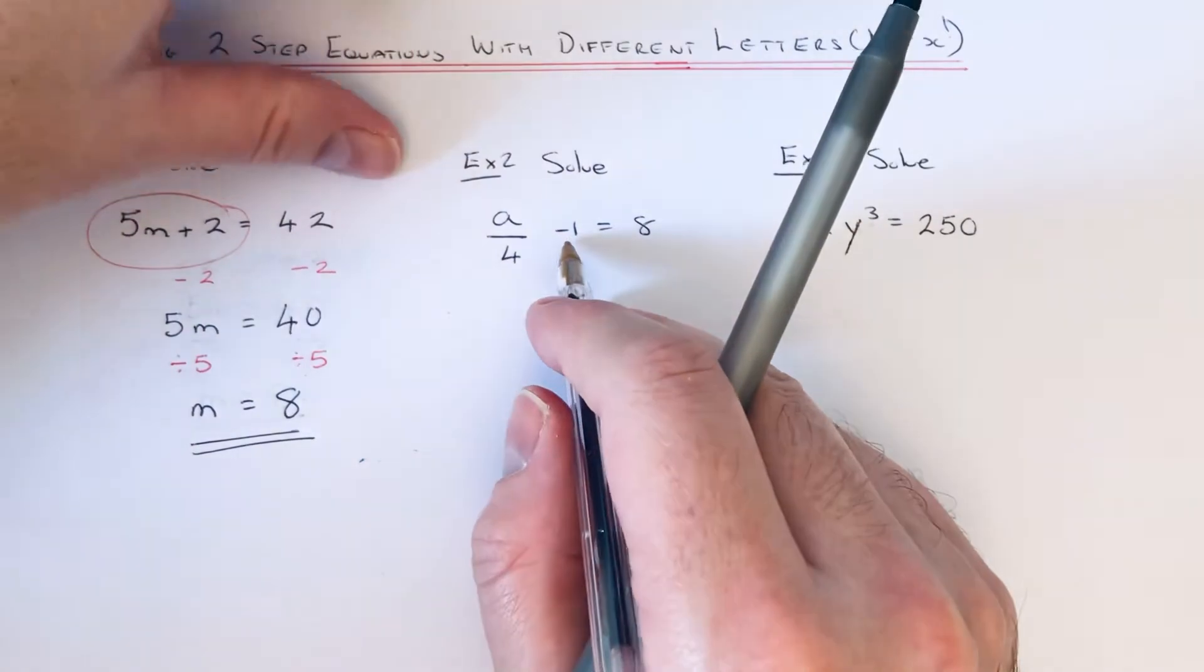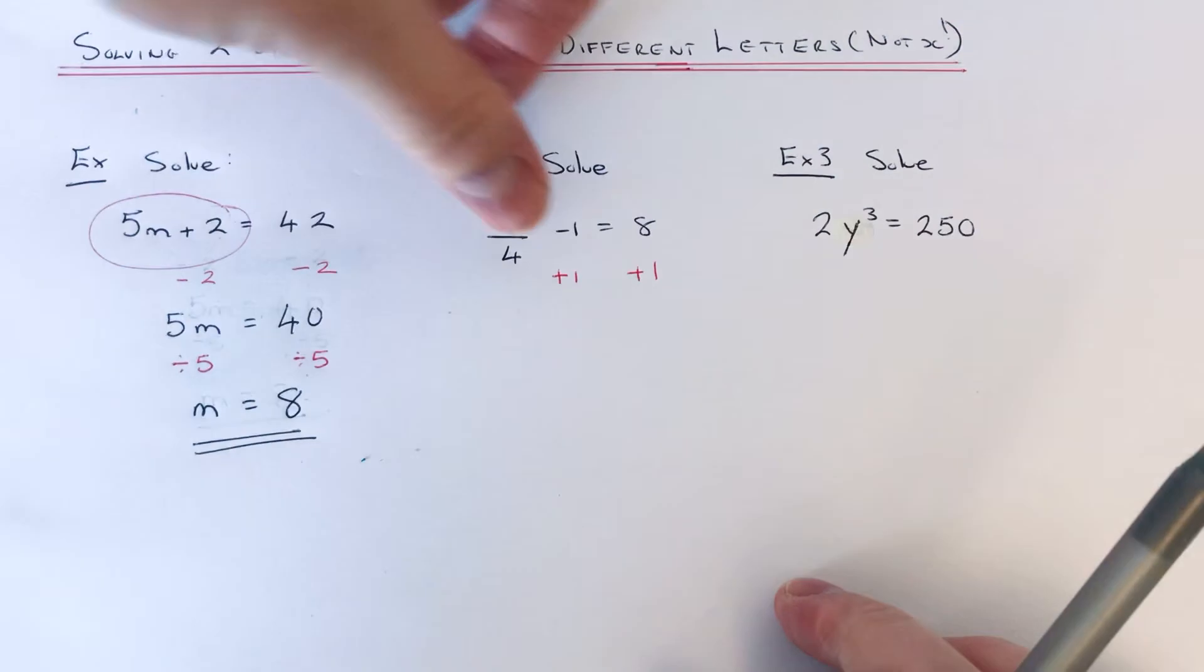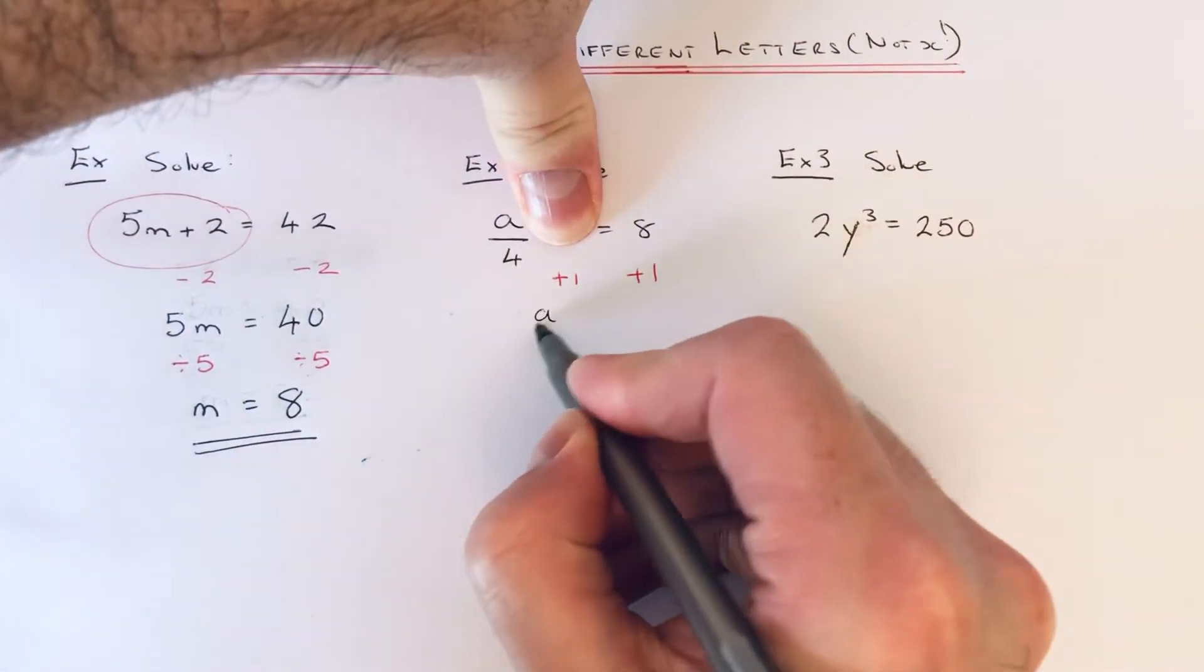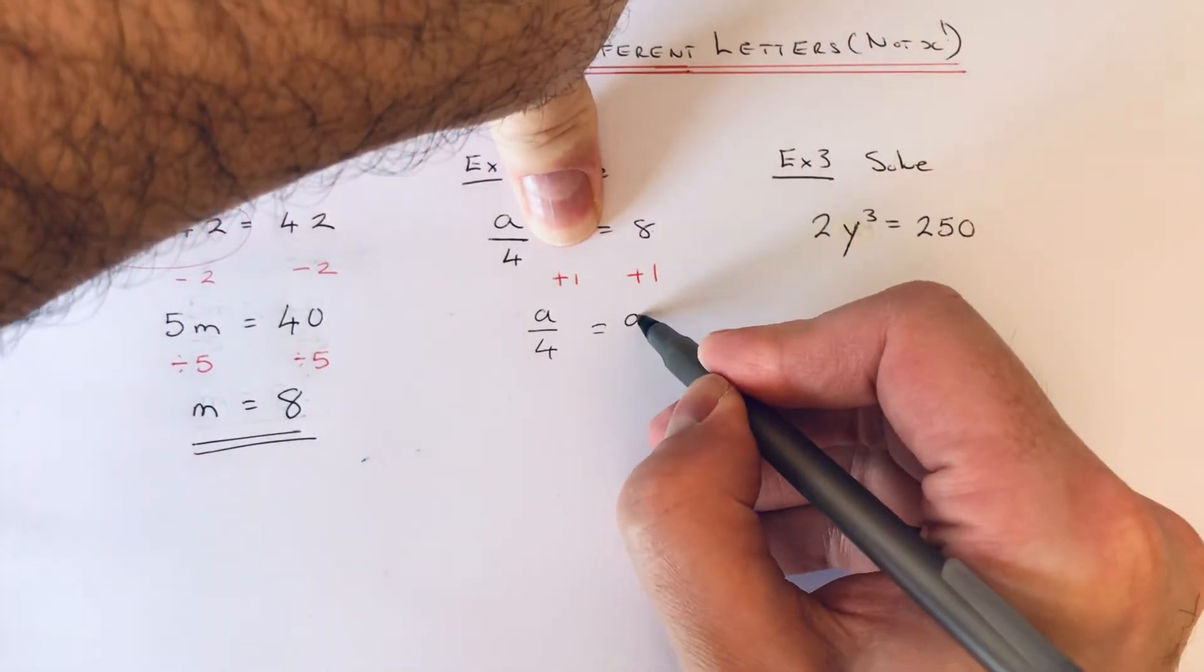So first of all, we get rid of the minus 1 by adding 1 to both sides. So that will get rid of that minus 1 and leave us with a over 4. 8 add 1 is 9.